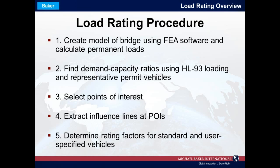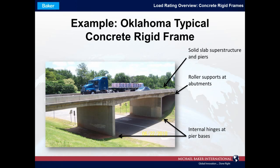The fourth step is to extract influence lines for the force effect in question at each point of interest. The fifth step is to use those influence lines to run any standard or user-specified vehicle over the structure and determine rating factors using the influence lines and information gathered in the previous steps. Let's see how this process plays out for one example bridge type.